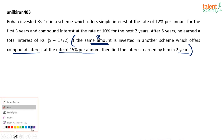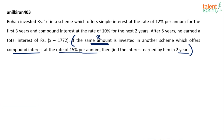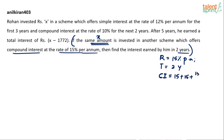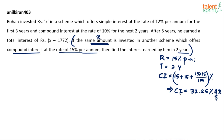For compound interest at 15% per annum for two years, using the effective percentage formula: a plus b plus ab by 100, that gives us 15 plus 15 plus (15 times 15 divided by 100). This equals 30 plus 2.25, so the compound interest comes out to be 32.25%. That is 32.25% of the principal amount x.